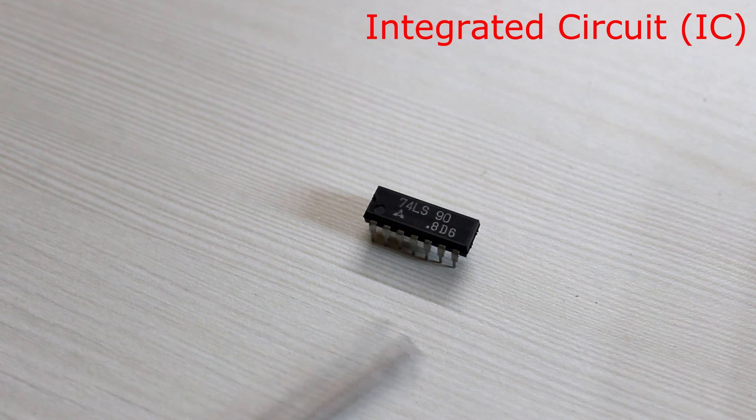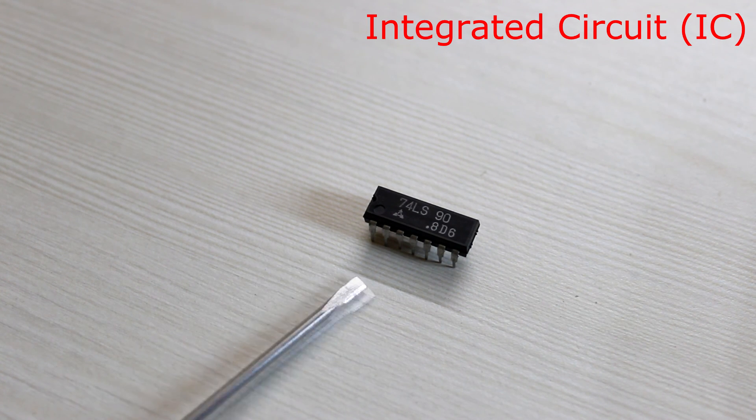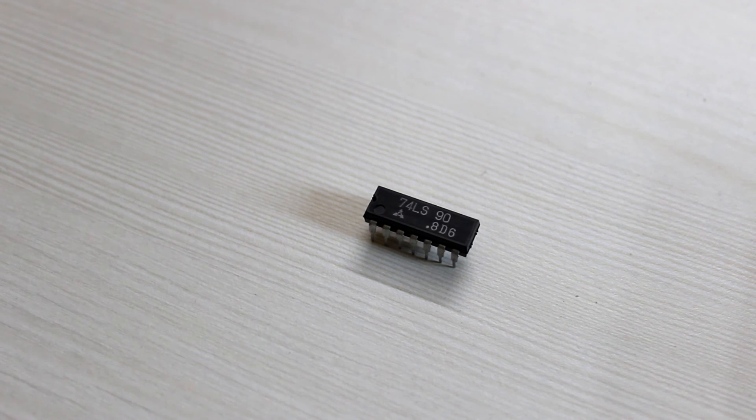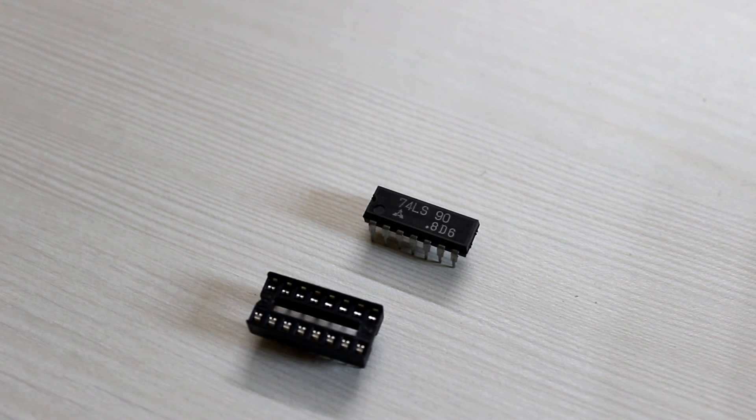An integrated circuit looks like this. We will go deeper into this later in the series. Integrated circuits are abbreviated as ICs. You can use an IC holder to plug the IC on it.